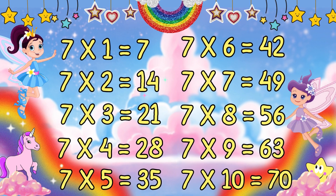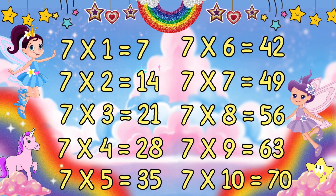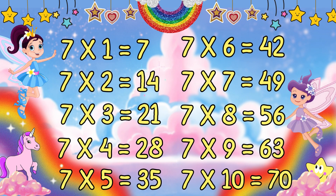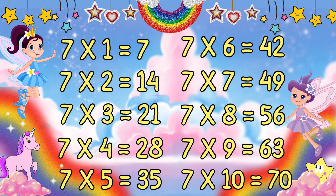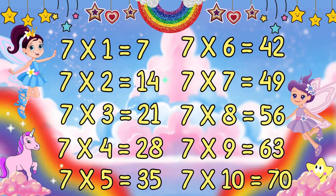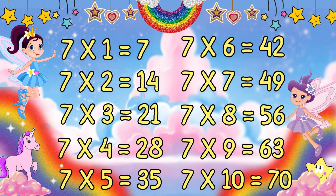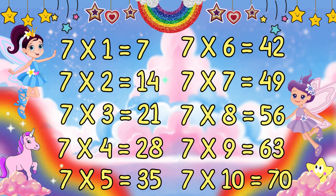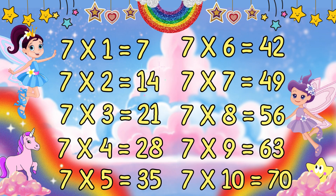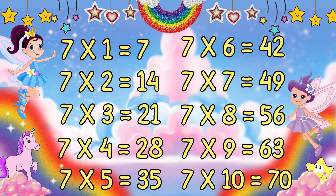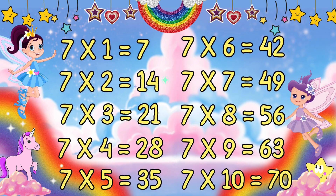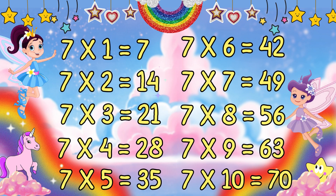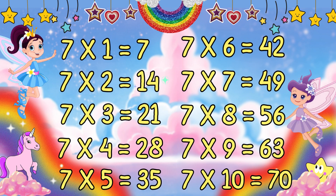7 times 1 is 7. 7 times 2 is 14. 7 times 3 is 21. 7 times 4 is 28. 7 times 5 is 35. 7 times 6 is 42. 7 times 7 is 49. 7 times 8 is 56. 7 times 9 is 63. 7 times 10 is 70.